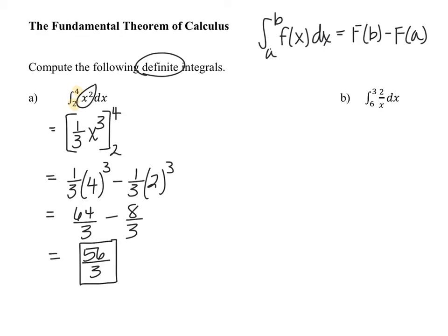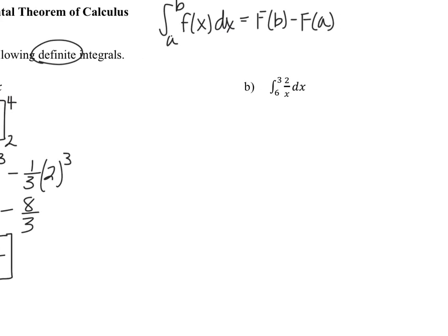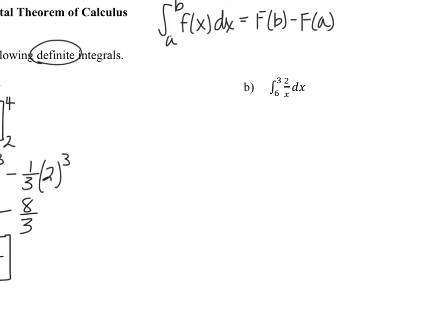In Example B, we're finding the integral from 6 to 3. Notice the limits of integration are in the wrong order — we want the lower limit to be the smaller value. So we interchange the limits of integration, which means we multiply by a negative. We also rewrite the integrand: instead of 2 over x, we write it as 2 times 1 over x. If we tried to treat 1 over x as x to the negative first and add 1 to the exponent, that leaves x to the 0, which equals 1 — that doesn't work.